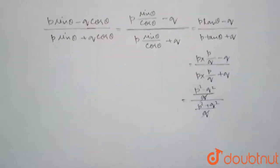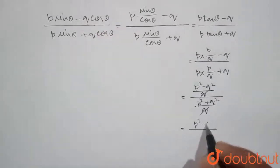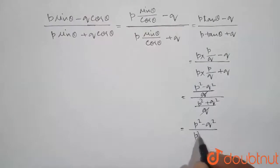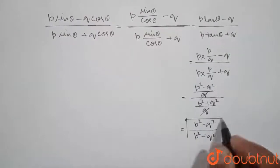Now, q q will cancel out and our final answer will be p square minus q square divided by p square plus q square. So, this is our final answer.